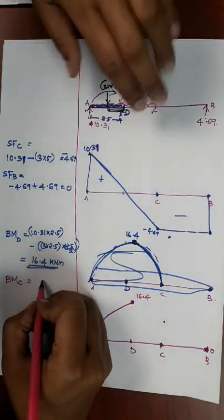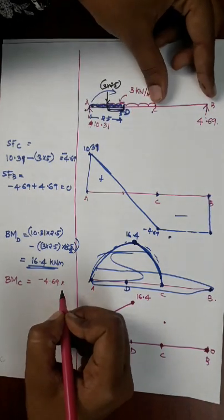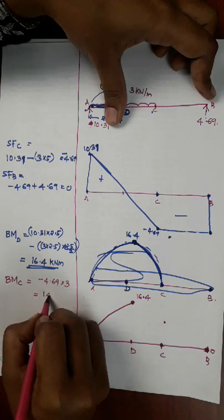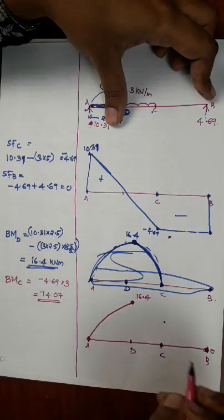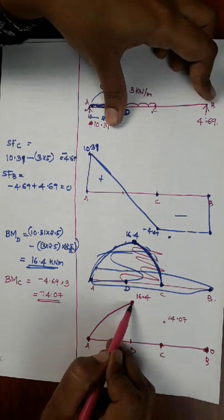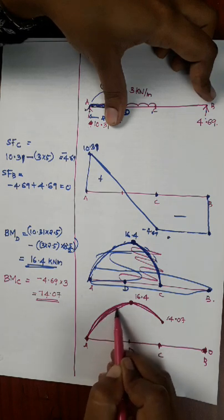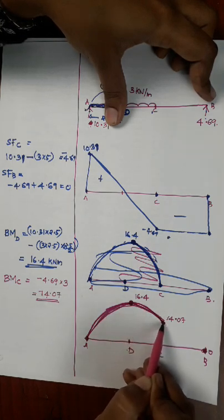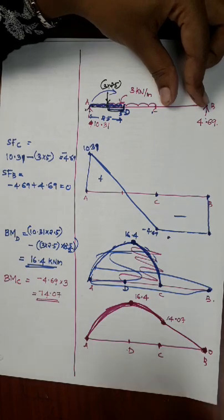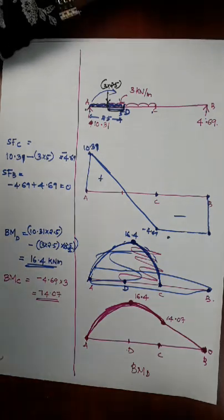Let's go to the bending moment at C. That is minus 4.69 into the distance, giving us minus 14.07. The bending moment diagram: A is equal to 0, D is equal to 16.4, B is equal to 0. It looks like a parabola — not a straight line, because there is a UDL. This will be our bending moment diagram. Hope you all understand. Thank you.